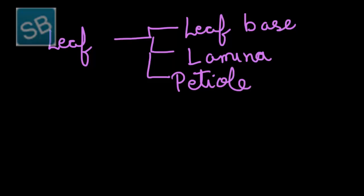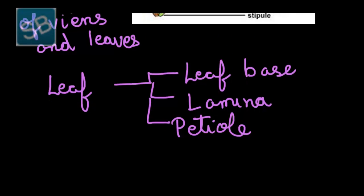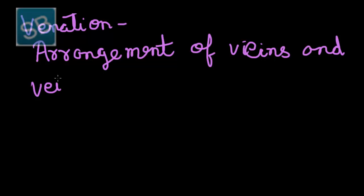Till now we have studied about the structure of leaf. Now we will understand about venation. What is venation and what are the types of venation. As studied earlier, the arrangement of veins and veinlets on lamina is known as venation.